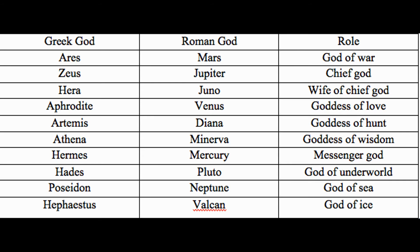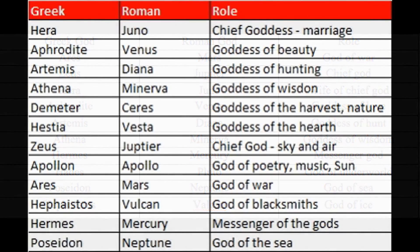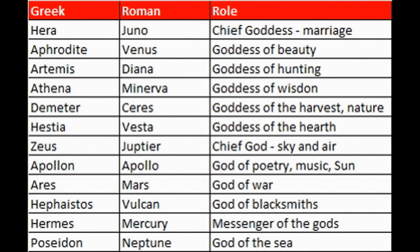Jupiter: chief God, King of gods. Pluto: God of the underworld, also known as Hades. Neptune: God of the sea. Uranus: Greek deity of the sky, father of Saturn and grandfather of Zeus, also known as Jupiter.